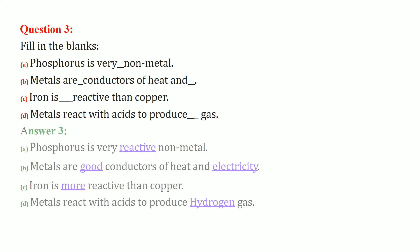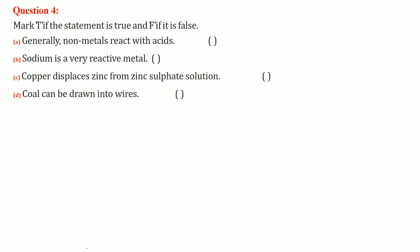Fill in the blanks: Phosphorus is very reactive non-metal. Metals are good conductors of heat and electricity. Iron is more reactive than copper. Metal reacts with acids to produce H2, that is hydrogen gas.